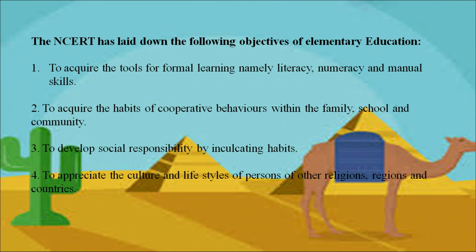We need to know we are living in a country where history and culture were a major part of its development. The NCRT has laid down the following objectives of elementary education: to acquire the tools for formal learning — literacy, numeracy, and manual skills; to acquire the basic habits of cooperative behavior within the family, school, and community; to develop social responsibility; and to appreciate the culture and lifestyle of people of other religions, regions, and countries, because diversity is the main character of our society.